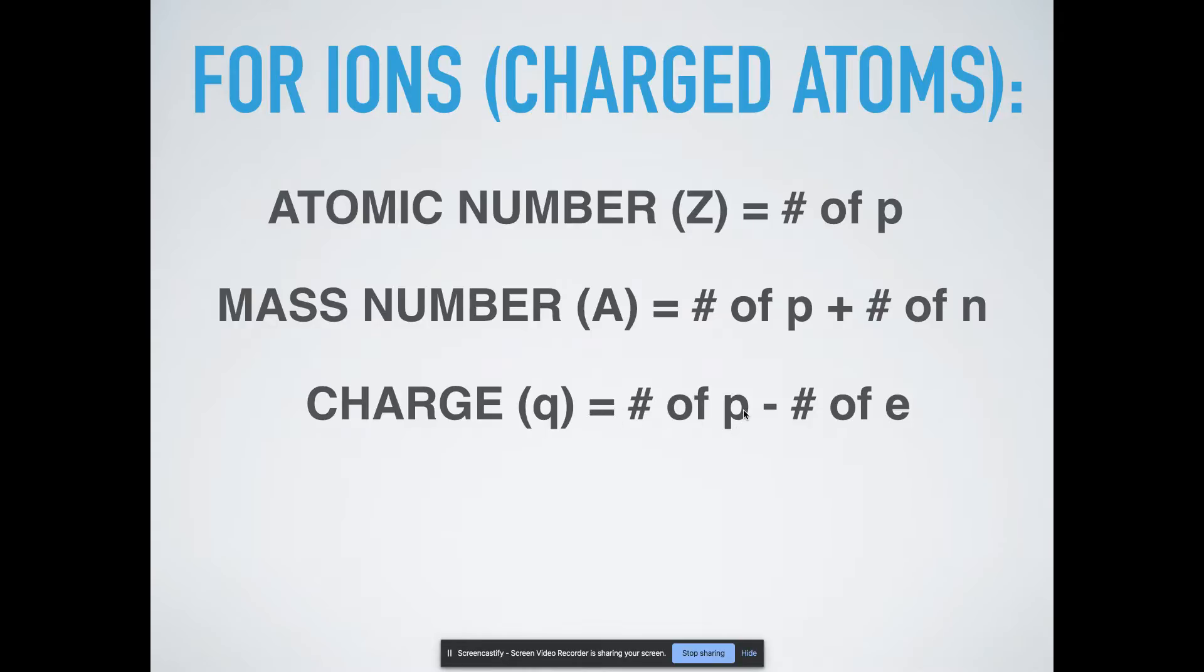So that means that it's possible if you have more protons than electrons, you're going to have a positive charge because a big number minus a small number is still going to be a positive number. Whereas it's the opposite if you have more electrons than you do protons. If you have more electrons than you do protons, then you're taking a smaller number subtracting a bigger number. You're going to get a negative value instead, which is where we get negative charges from.